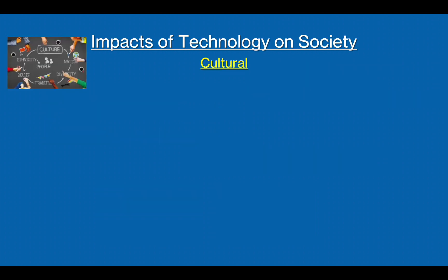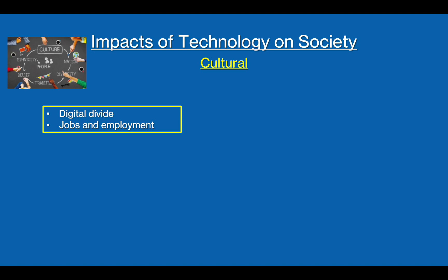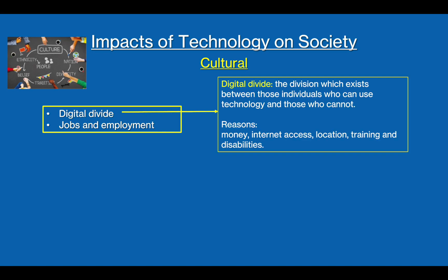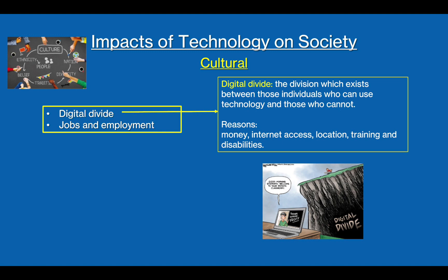Cultural issues cover a broad range of concerns including race, religion, sexual orientation, gender, and disability. They are issues that have an effect on the people and culture of society. One cultural issue is the digital divide — the division which exists between those individuals who can use technology and those who cannot.